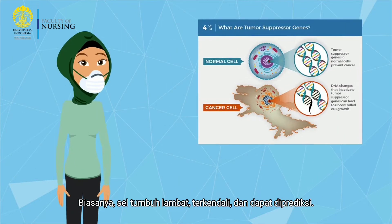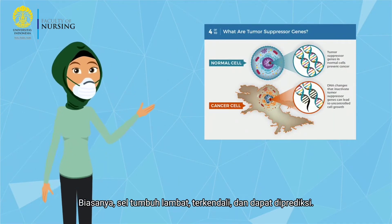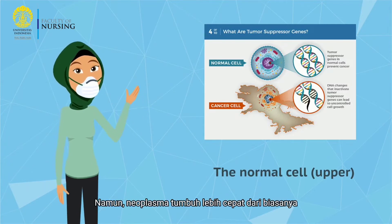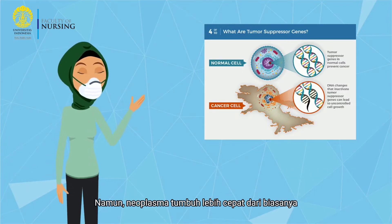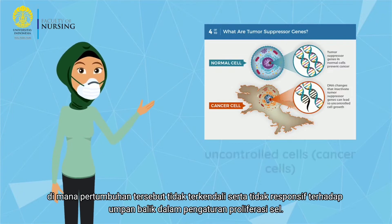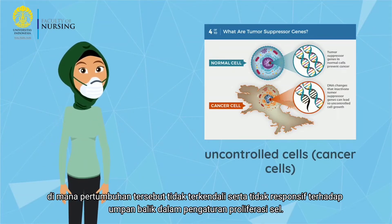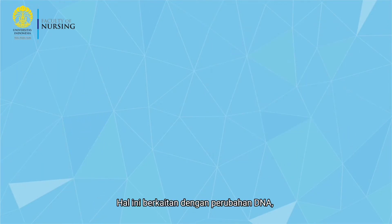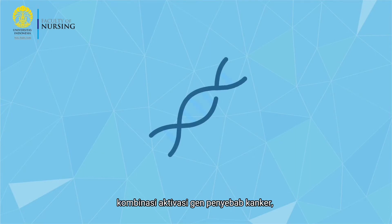Normally, cells grow slowly, controllably, and predictably. However, neoplasm grows faster than usual. It's an uncontrolled growth which is unresponsive to feedback in cell proliferation settings. The cause is related to changes in DNA, the combination of activation of cancer-causing genes, and inactivation of tumor suppressor genes.